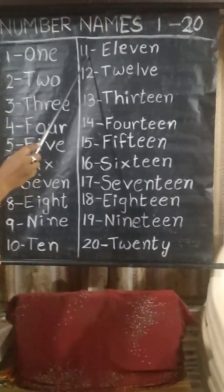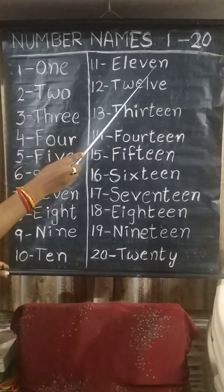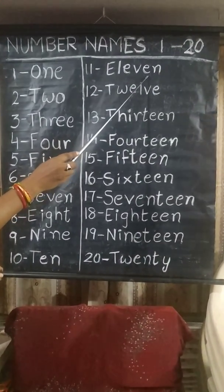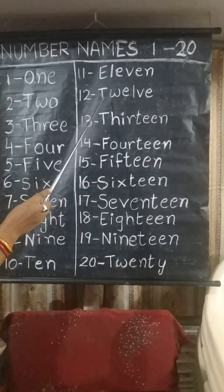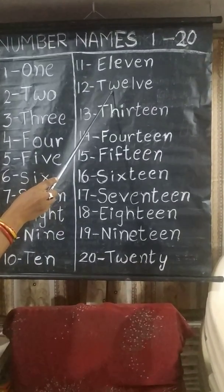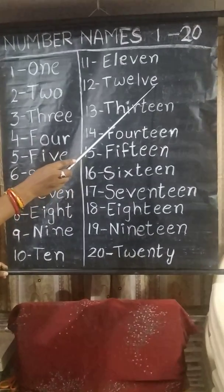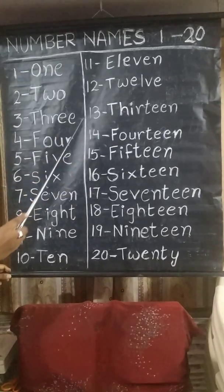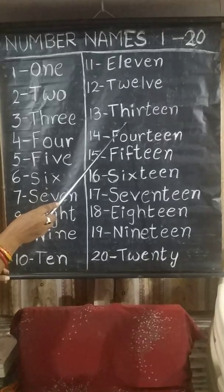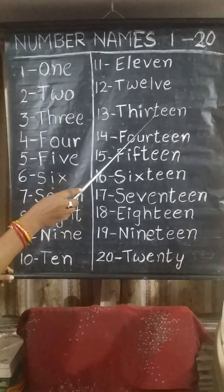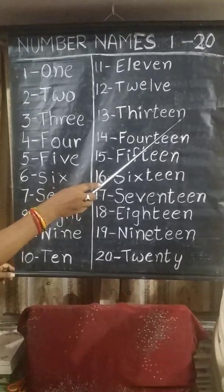11 — E, L, E, V, E, N. ELEVEN. 12 — T, W, E, L, V, E. TWELVE. 13 — T, H, I, R, T, E, E, N. THIRTEEN.